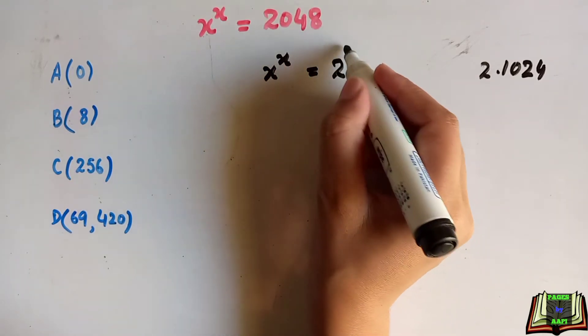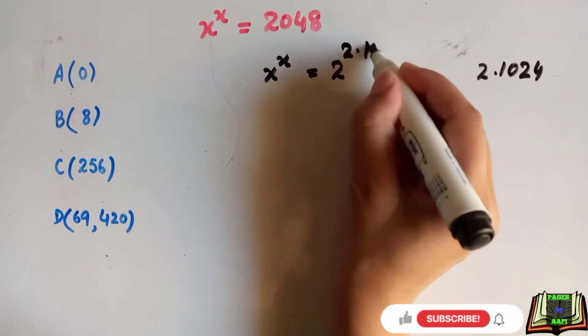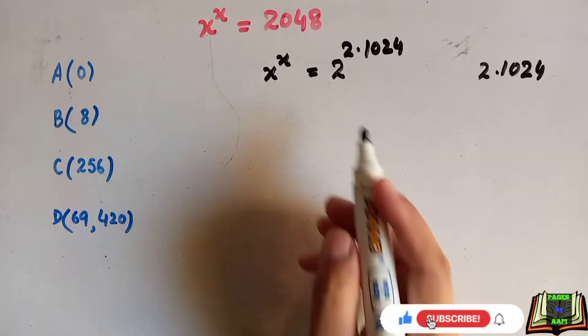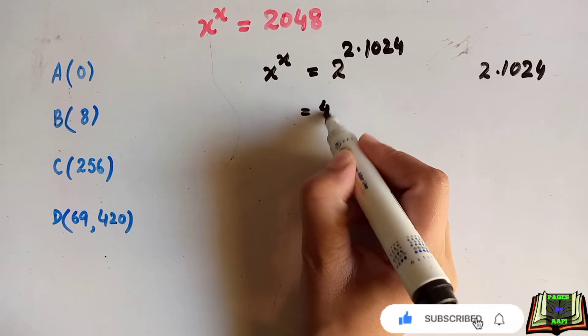it as 2 to the power 2 into 1024. Now after multiplying 2 to the power 2, we get 4